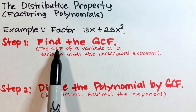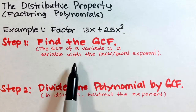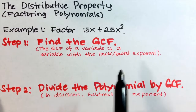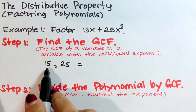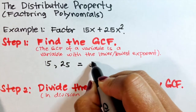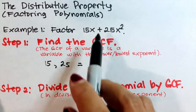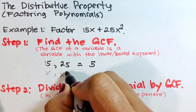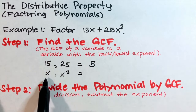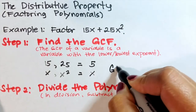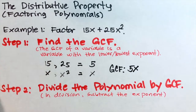Step number one: simply find the GCF, or greatest common factor. Remember that the GCF of a variable is the variable with the lowest exponent. For 15 and 25, the greatest common factor is 5. Between x and x squared, the GCF is x — the variable with the lower exponent. Therefore, the GCF of 15x plus 25x squared is 5x.